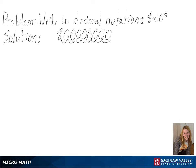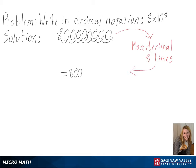And since our exponent is 8, we can add eight zeros, so we are able to move our decimal eight times. So we get 800 million as our final answer.